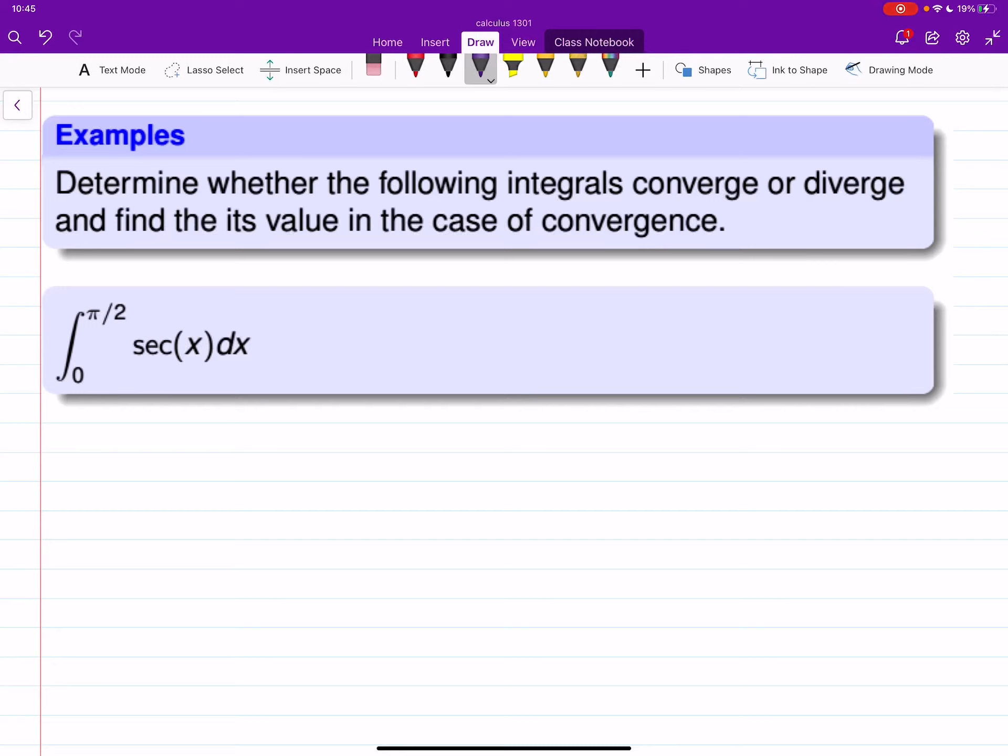Hello everyone, in this video we will do some examples for improper integrals of the type that has discontinuous integrand. First, the integral is the integral of secant from zero to π/2, so my function is secant x.